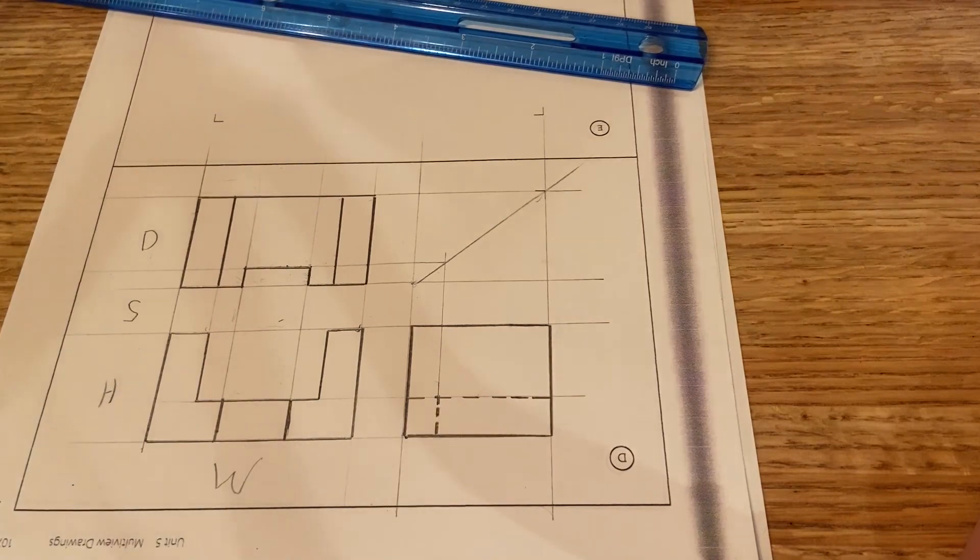So this is review activity 5-5. And this is problem number two when we're sketching out the multi-view drawings.